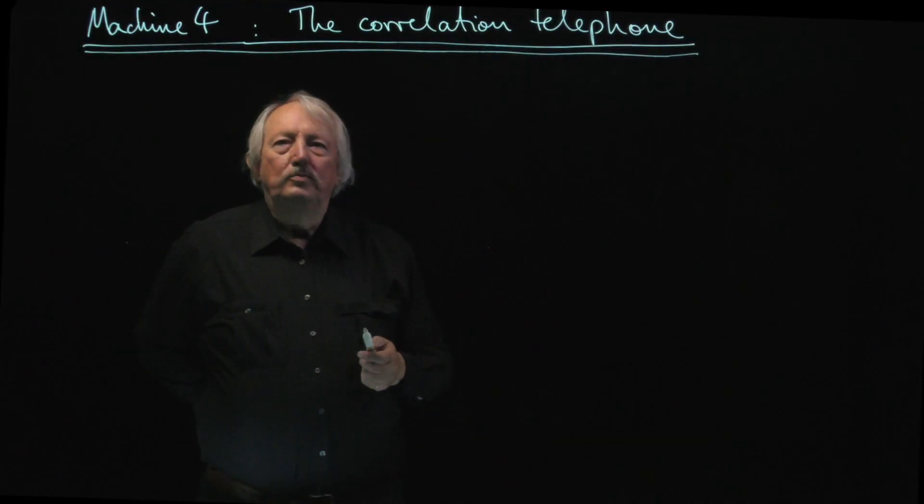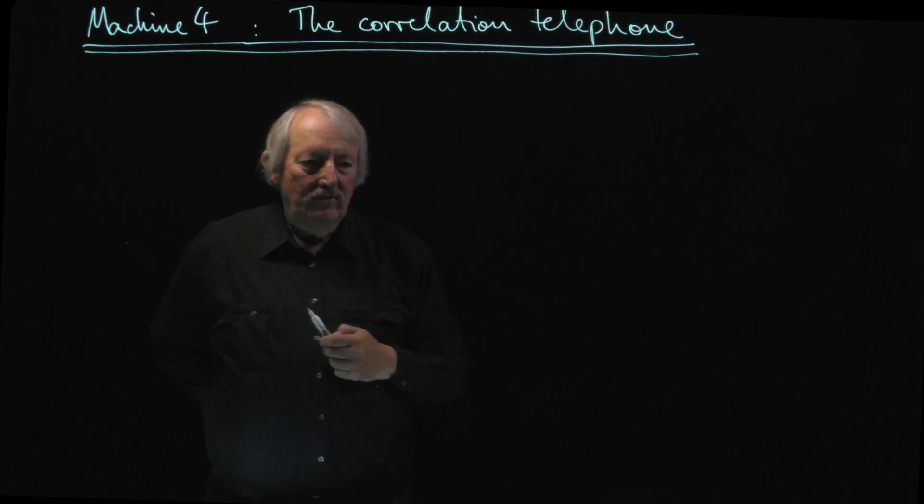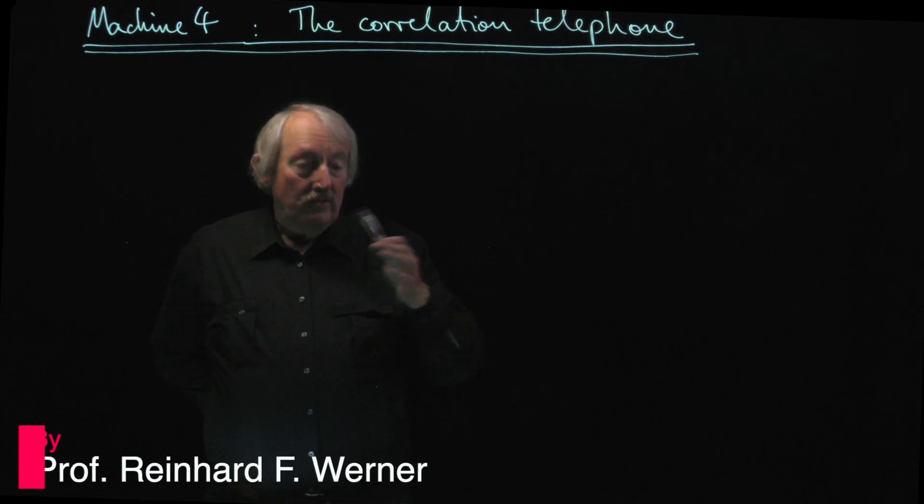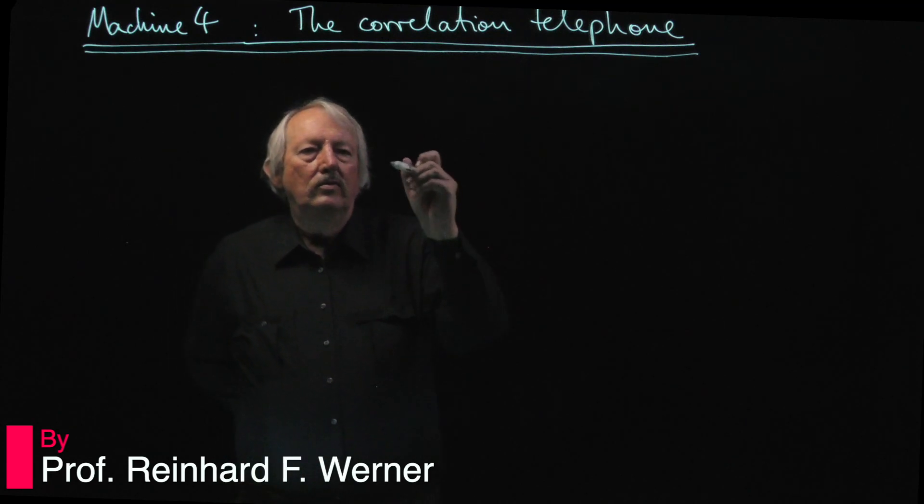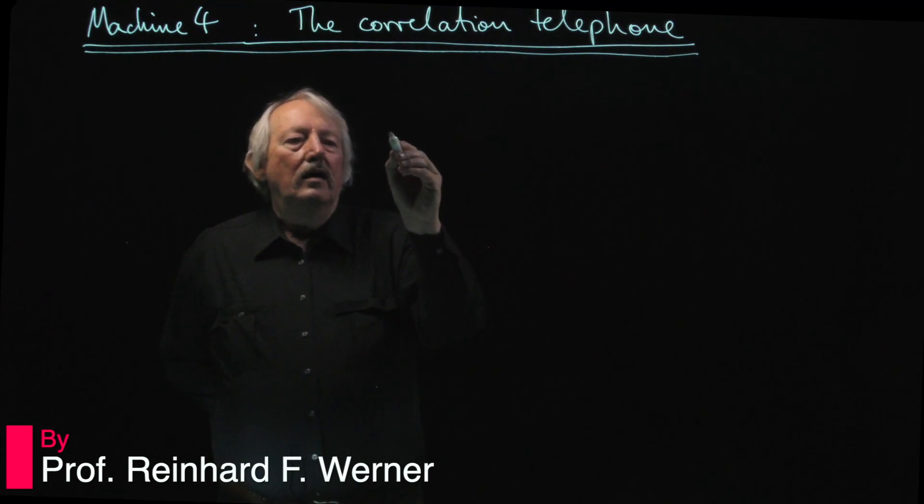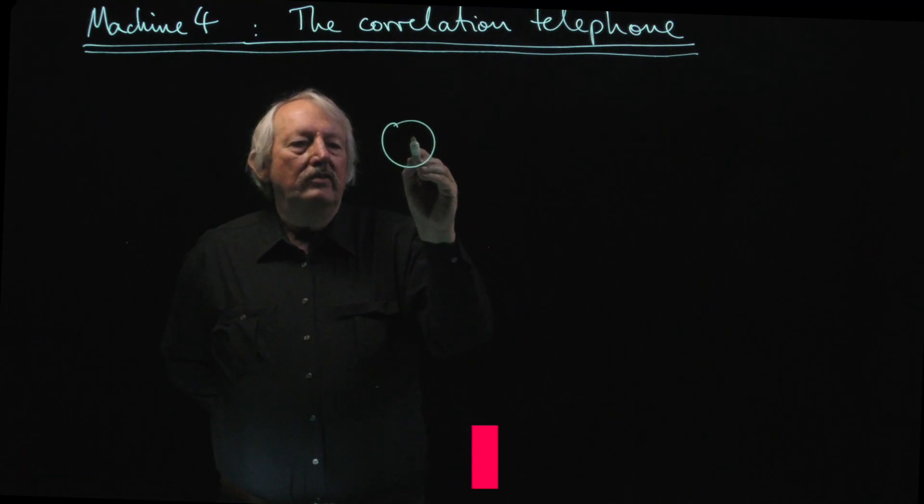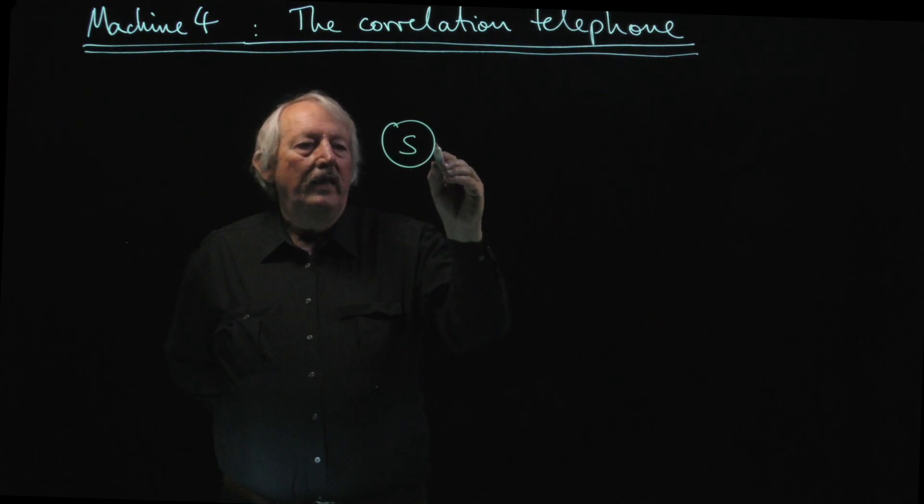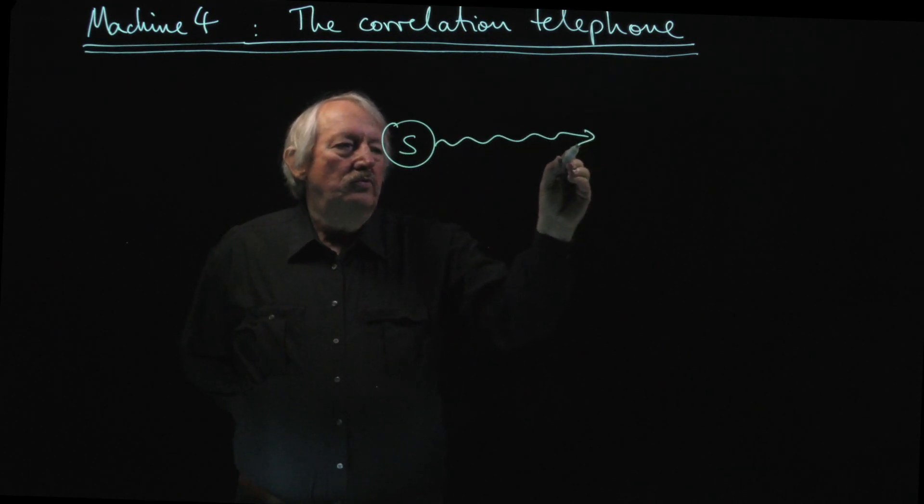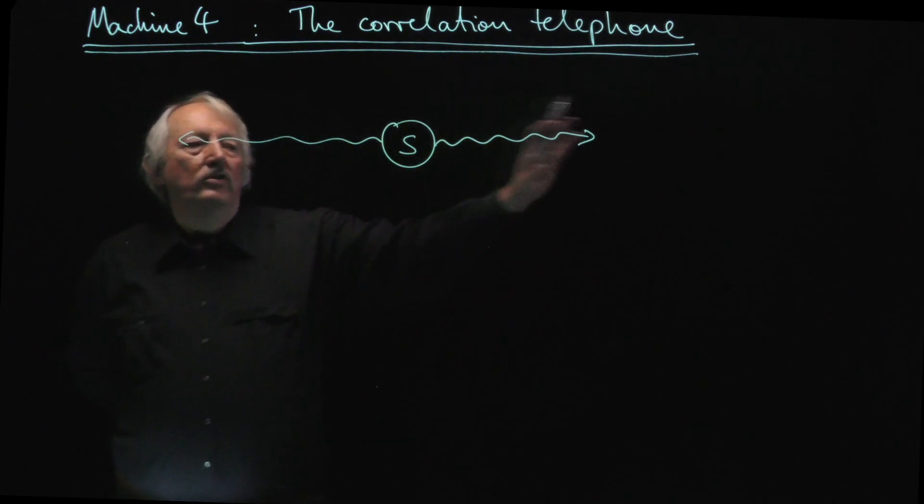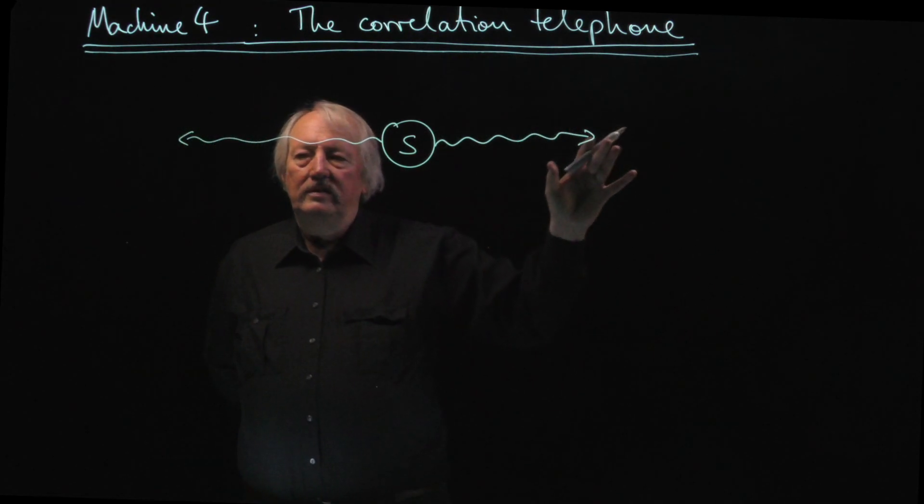Let's look at the last machine in this series of impossible machines. I call it the correlation telephone. First I'll describe what it should do. It works by having a source of particles and the particles actually go in different directions and maybe very far separated from each other in the end.